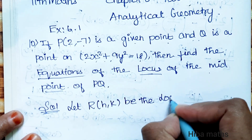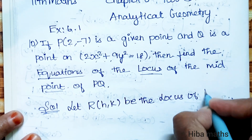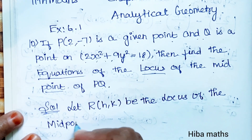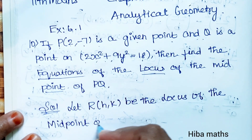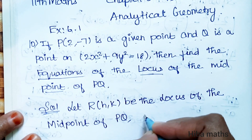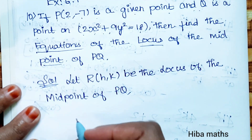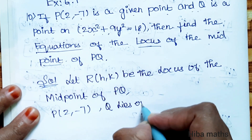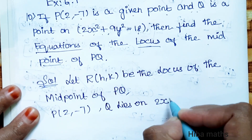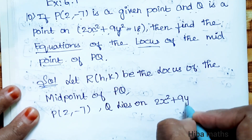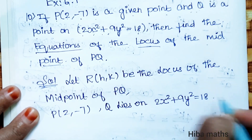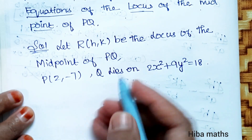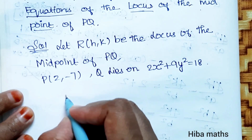Let R be the locus point — the midpoint of PQ. P is the point (2, -7) and Q lies on the ellipse 2x² + 9y² = 18. So Q is a point on this ellipse.